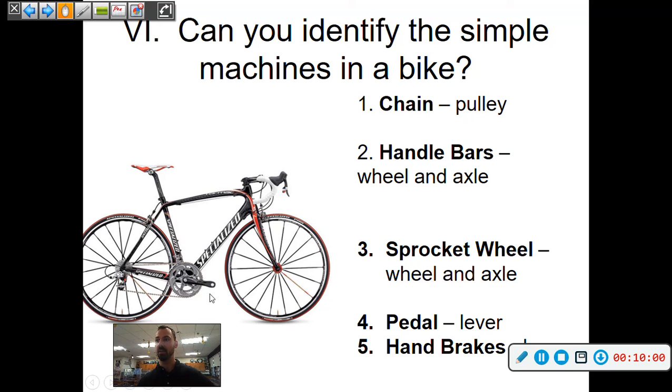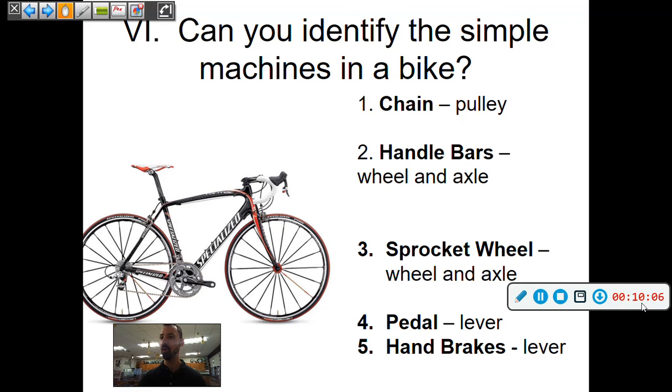A sprocket wheel, that's this guy here, that's a wheel and axle also. A pedal is a lever, and also the hand brakes are a lever also. So many simple machines in things like a bike, right? So as an example.